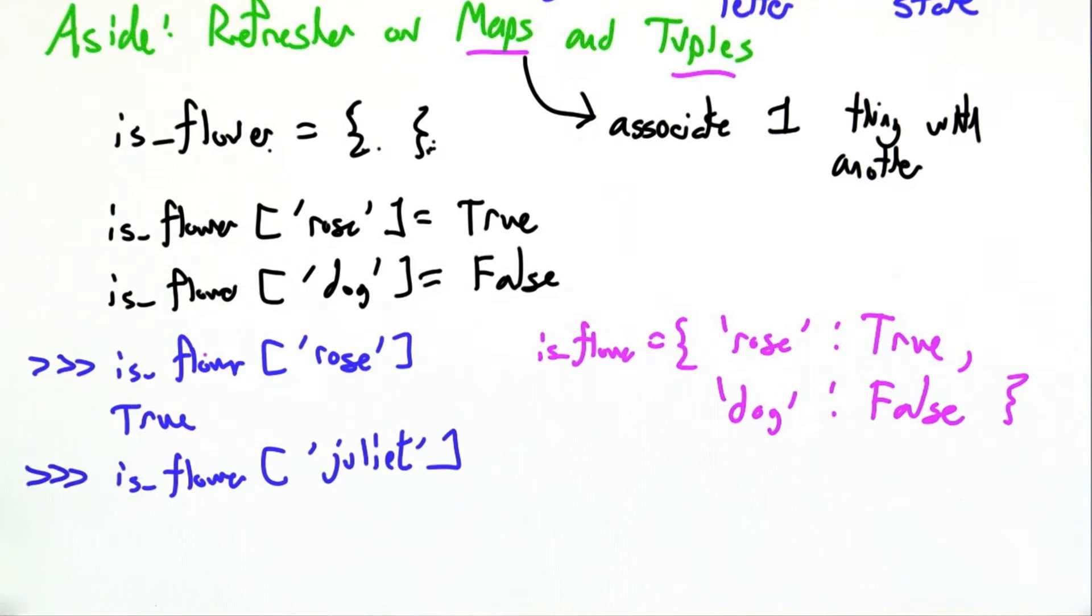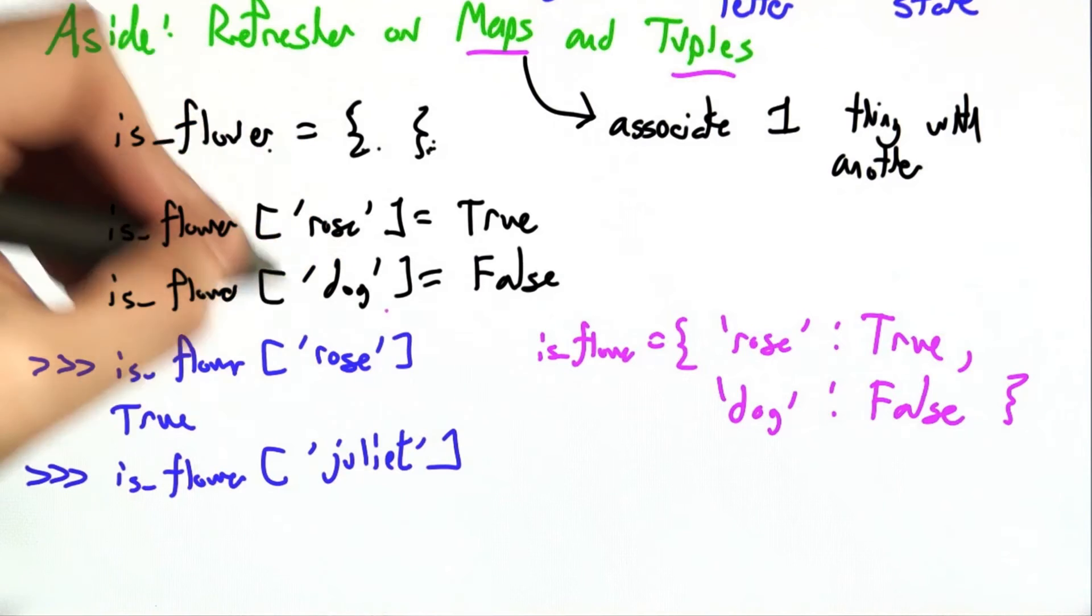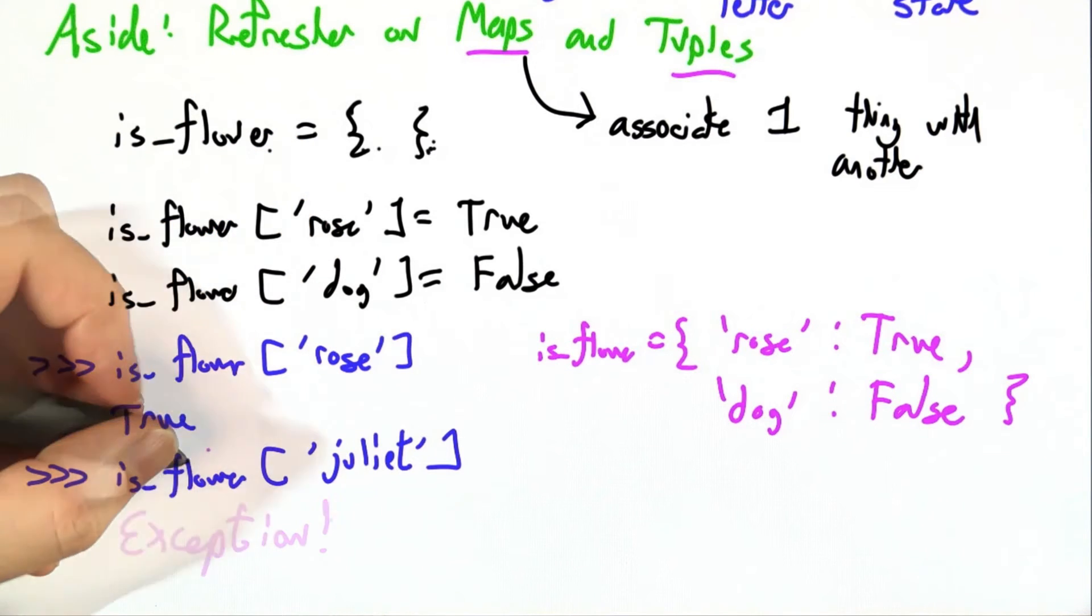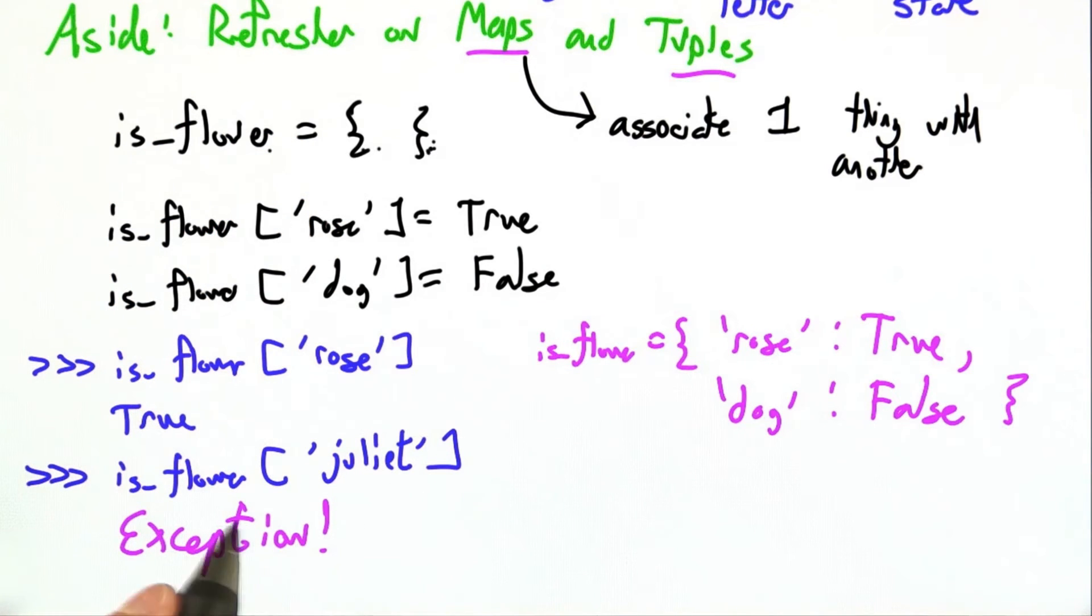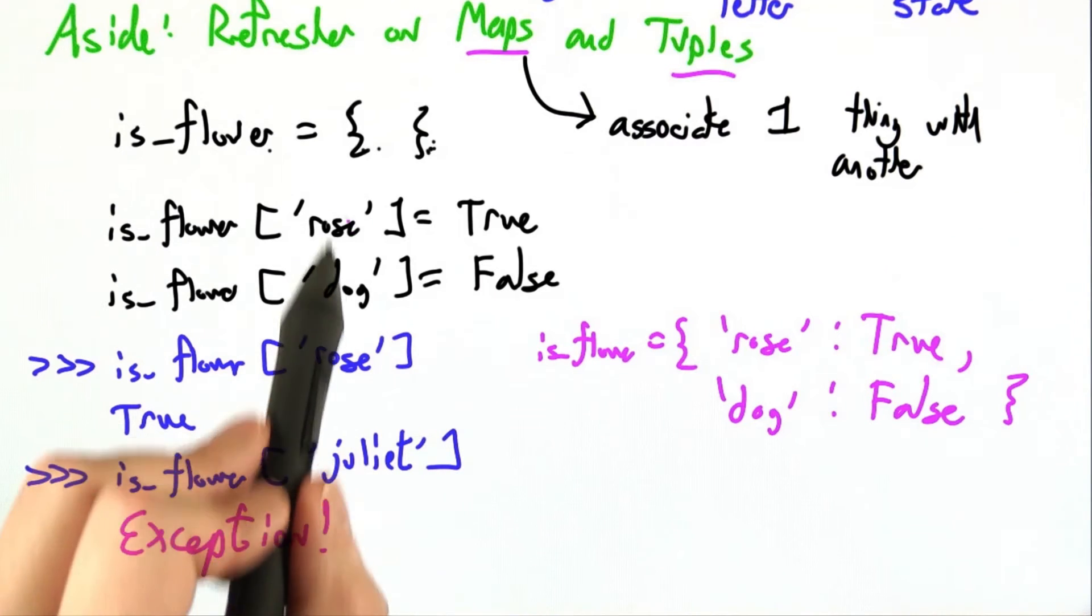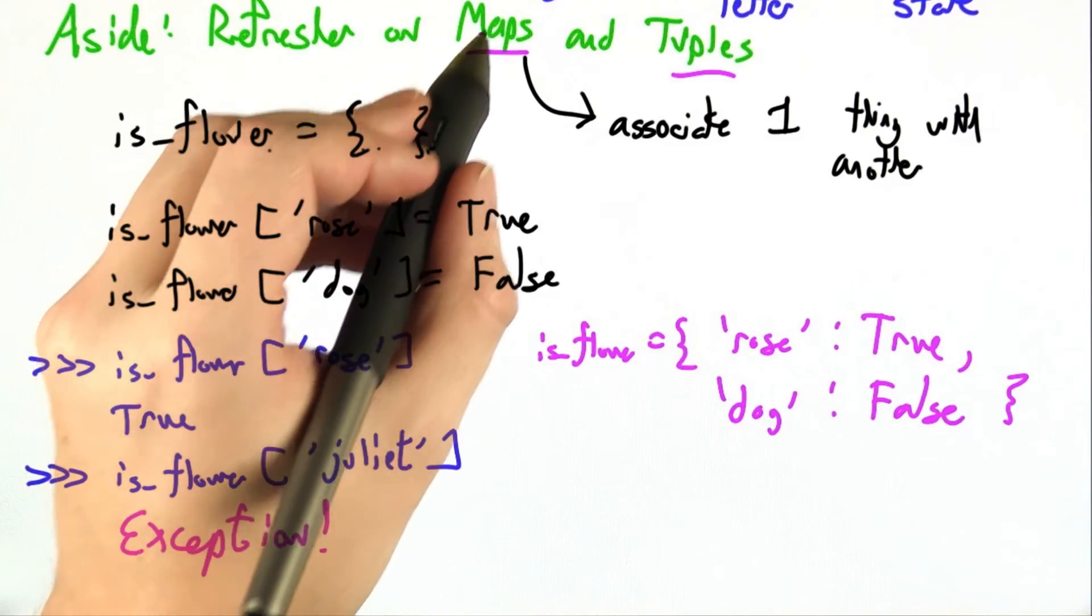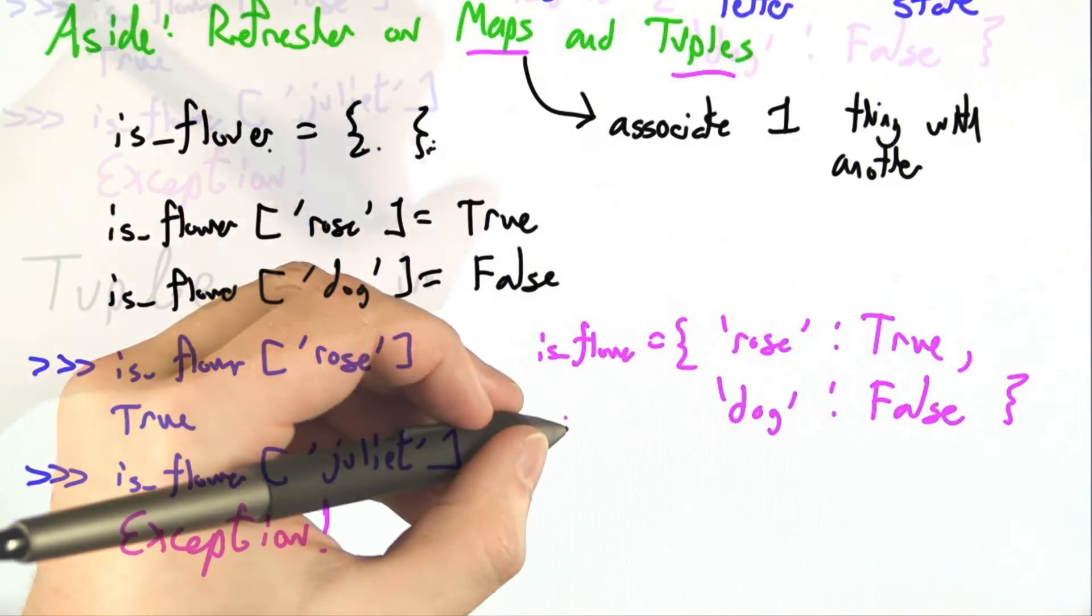Now at this point you're probably thinking, what's in a name? Is this word rose really important? Or would a rose by any other name still smell as sweet? Well, we may be able to tell synonyms, but Python cannot. So if I try something like is_flower Juliet, that's not defined in this mapping, so we will get some sort of key error or element not found exception. For Python dictionaries, you need to get the name exactly right. Dictionaries and mappings are synonyms. They both refer to the same thing.